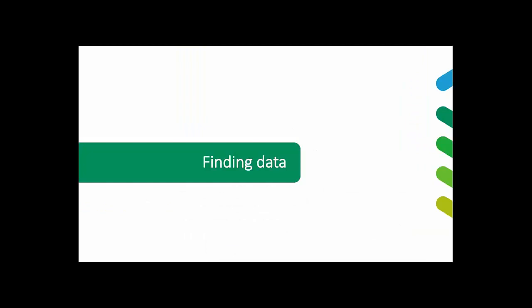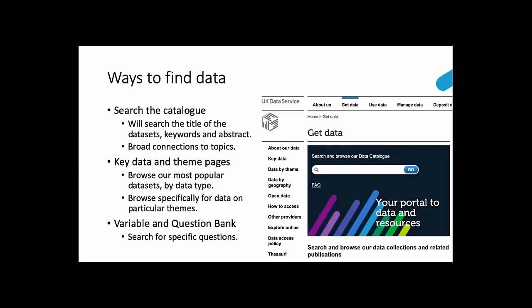In the second half of this presentation I want to talk about how you go about finding data to tell your story. There are different ways to find data on the UK Data Service website. You can use the data catalogue on the main home page to search for data sets — it will search the data set title, keywords, and the abstract. You can also click on 'Get Data' at the top, then navigate to key data or data by theme to start looking at what survey data might be available for your needs.